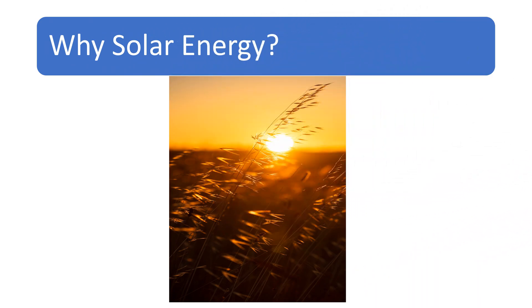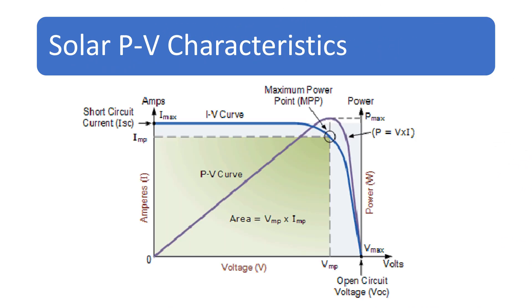The maximum power point in a solar PV system is the operating point at which the solar panel produces the highest electrical power output, achieved by matching the load impedance to the panel's characteristics.